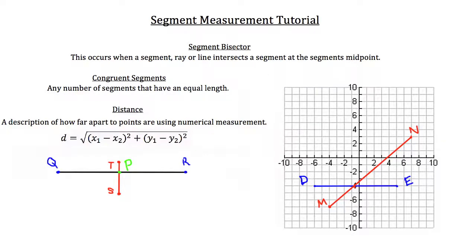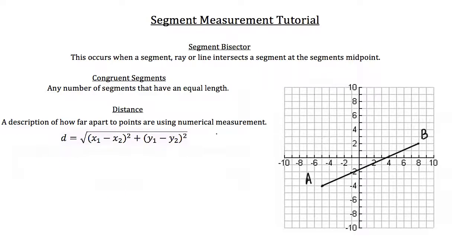Something you'll use to measure segments is the distance formula — distance is a description of how far apart two points are using numerical measurements. Let's practice applying it. I'll pick point A at negative 5, negative 4 and point B at positive 8, positive 2, then draw a line connecting them to create segment AB. Point A has coordinates negative 5, negative 4 and point B has coordinates 8, 2.